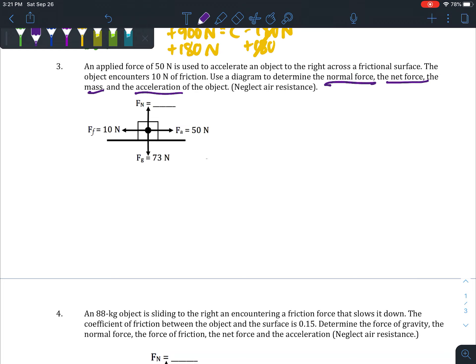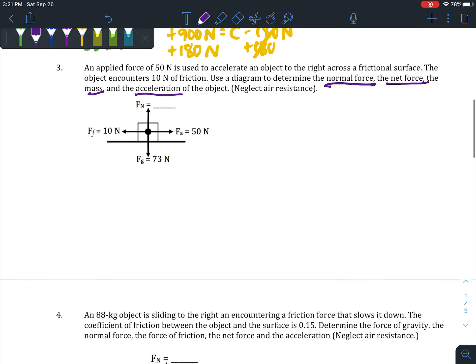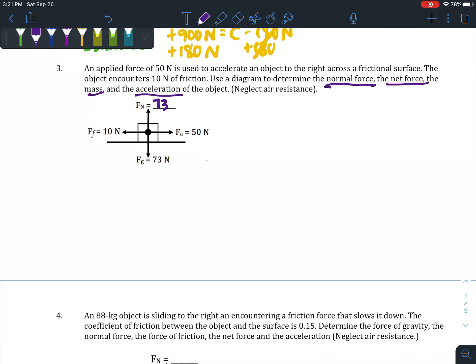We look at our diagram first—they provided it for us. We see F_f and F_a, we see F_g, and then there's a blank normal force. We could start there. We know our object is not falling through the floor and it's also not rising up, so that means F_n and F_g must equal each other. So we can put 73 newtons for F_n. As long as the object's on a flat surface, you can pretty much always assume that normal force and gravitational force will equal each other.